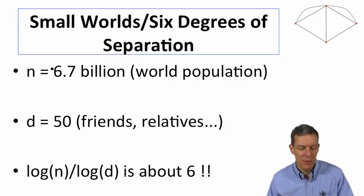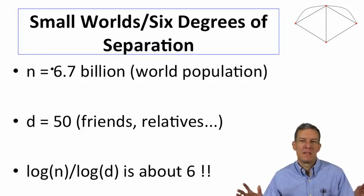Take 50 for an average number of people that somebody might talk to on a regular basis. Now do log of 6.7 billion over log of 50, what do you end up with? Six.